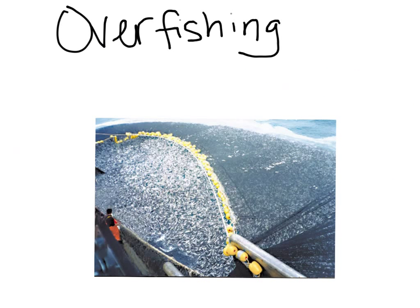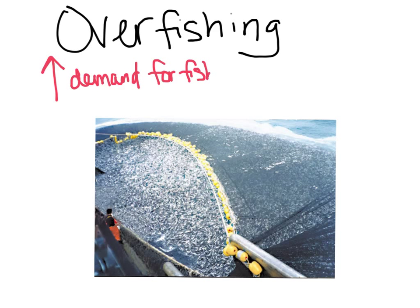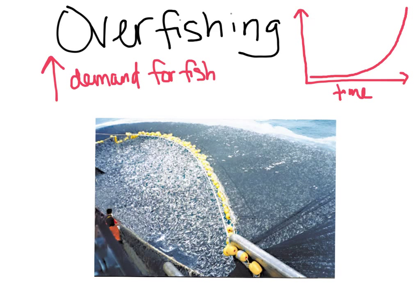Our last example of how humans have changed the environment is overfishing. The major reason we are collecting more fish from the ocean is increased demand — fish is a great source of protein and is healthy. Especially as human population has grown most in areas like China and India where fish is very popular, demand increases even more. Human population growth is pretty much exponential, and with that comes an exponential demand for fish.